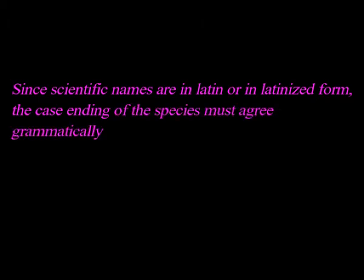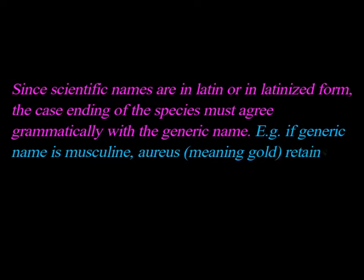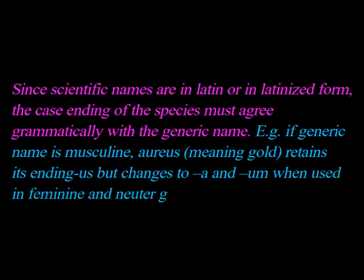Since scientific names are in Latin or latinized form, the case ending of the specific epithet must agree grammatically with the generic name. For example, if the generic name is masculine, aureus meaning gold retains its ending -us, but changes to -a and -um when used in feminine and neuter gender respectively.